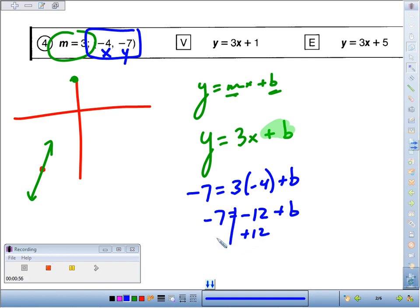Solving for b, we add 12 to both sides. We get the y-intercept is negative seven plus 12, or 12 minus seven is five.